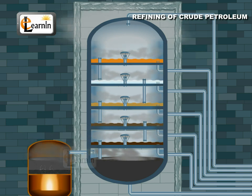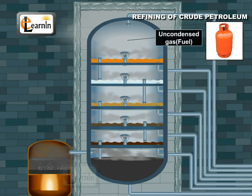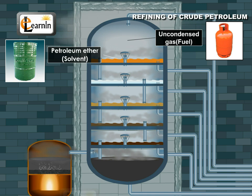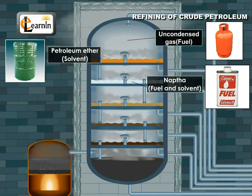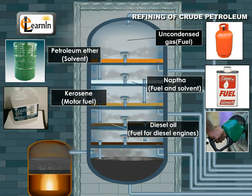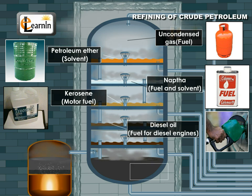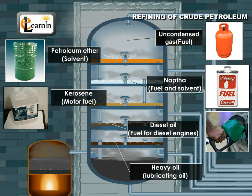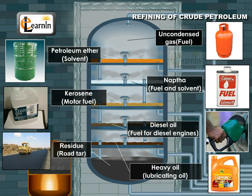After fractionation, the principal products obtained are: uncondensed gas (fuel), petroleum ether (solvent), naphtha (fuel and solvent), kerosene (motor fuel), diesel oil (fuel for diesel engines), heavy oil (lubricating oil), and residue (road tar).